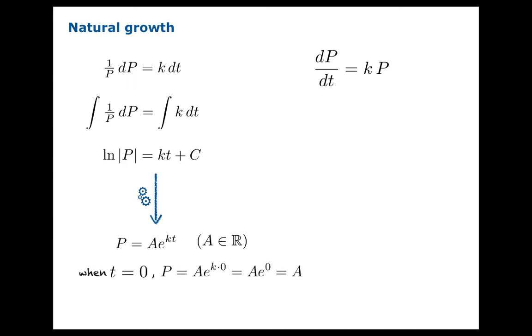Now, an observation is in order here. When t equals zero, you can plug zero in for t, and p winds up being precisely that constant A, which we have up front.